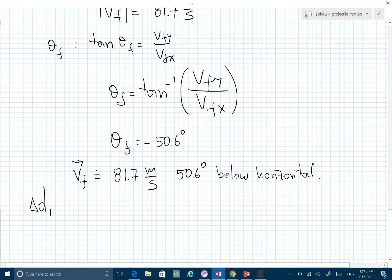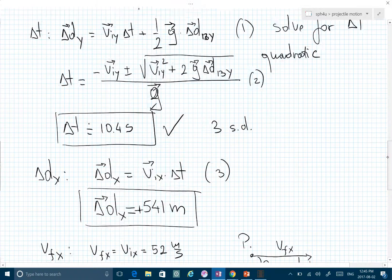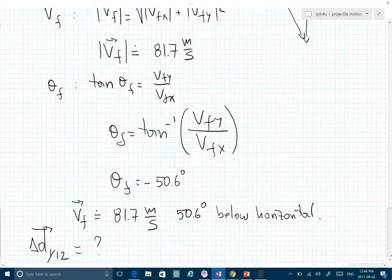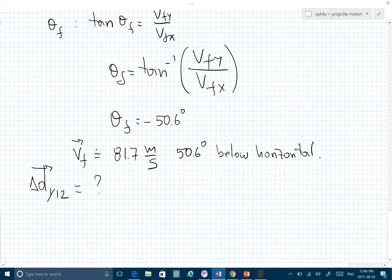Now the last thing we want to find is Delta D Y from 1 to 2, which is the maximum height. Let me show it on the diagram. We want to find how far up the projectile went before starting to go down.